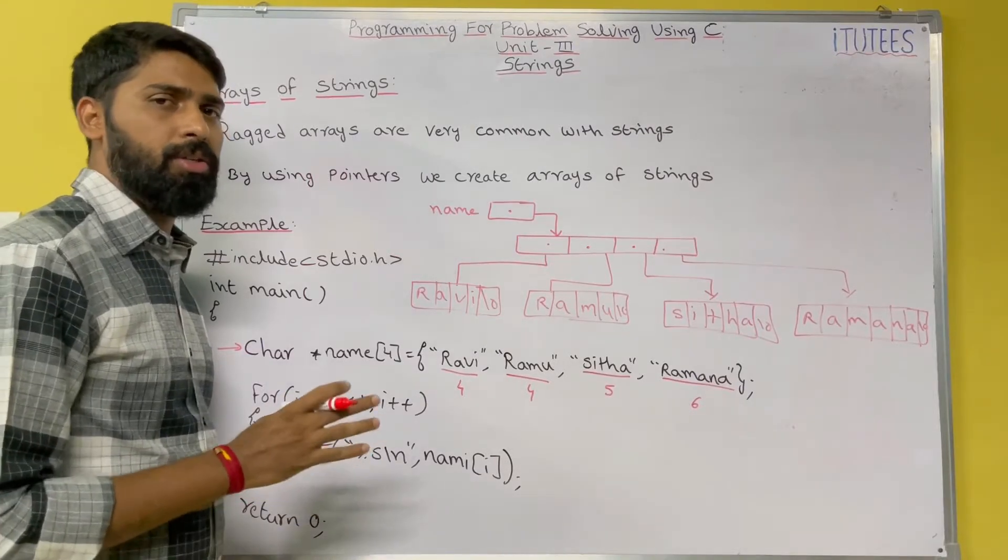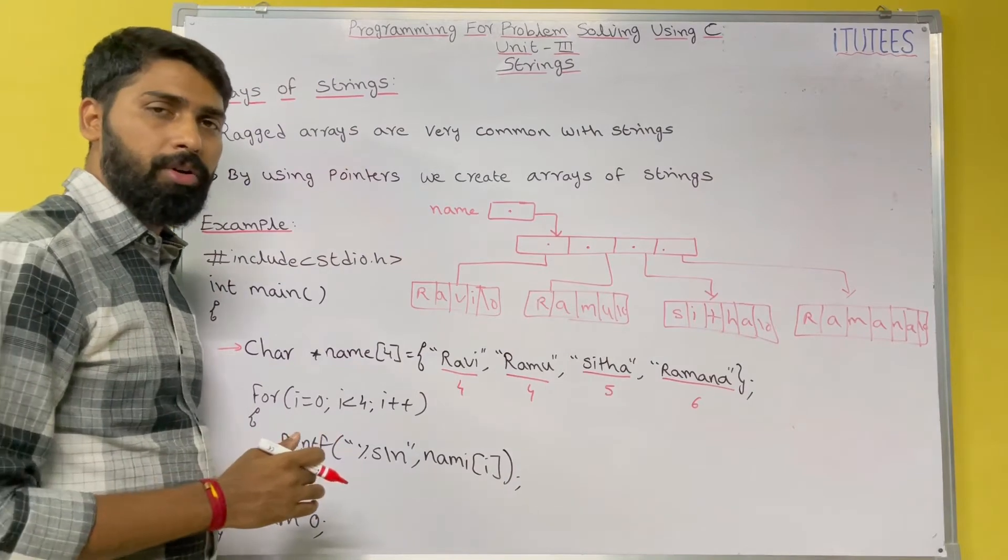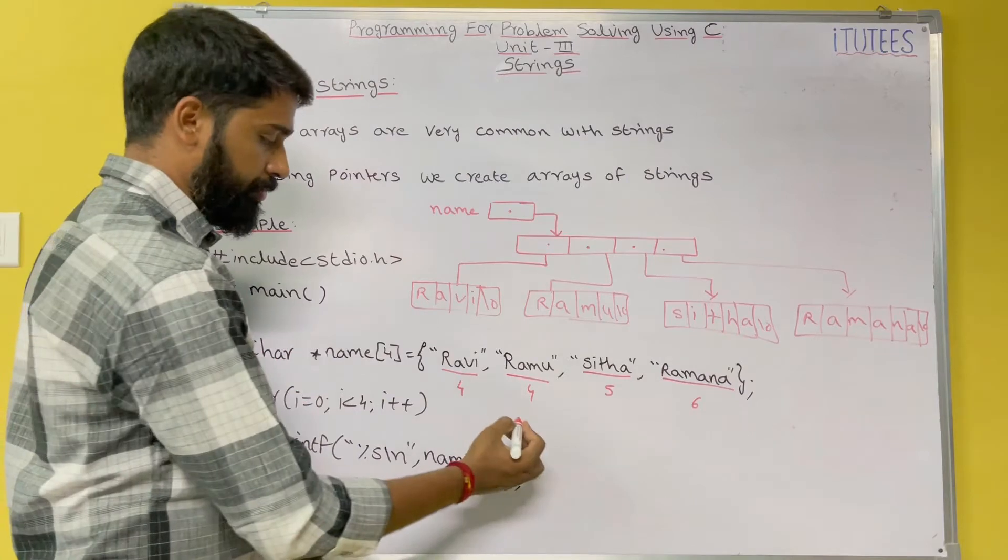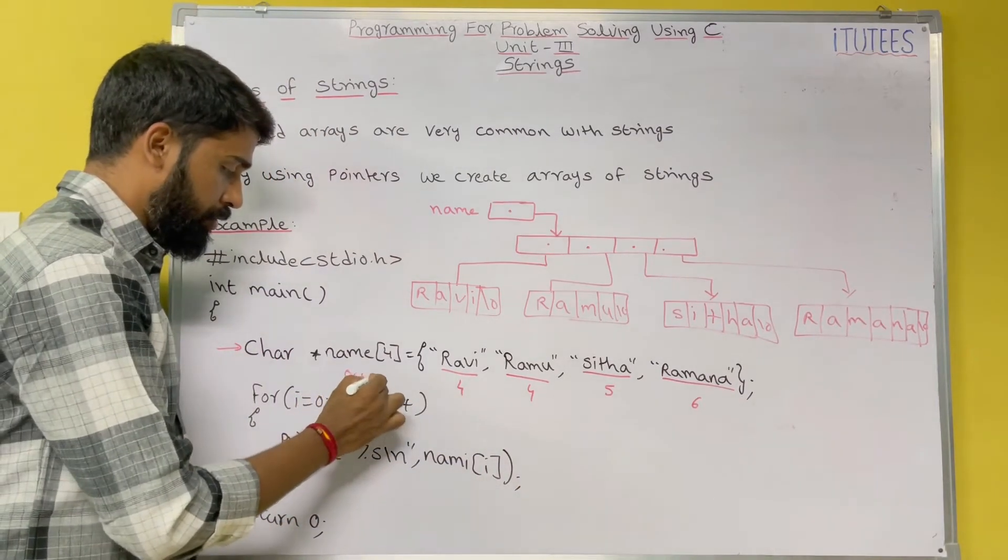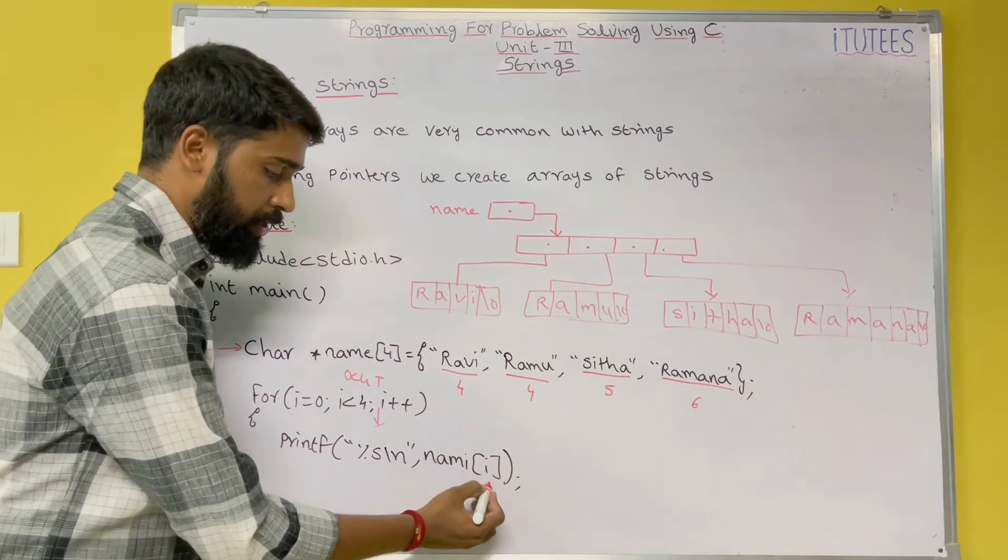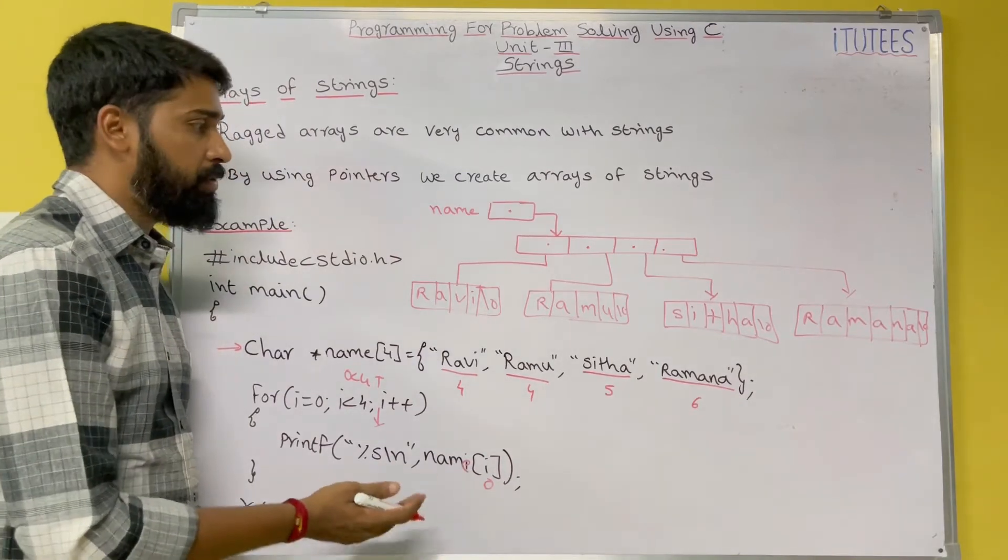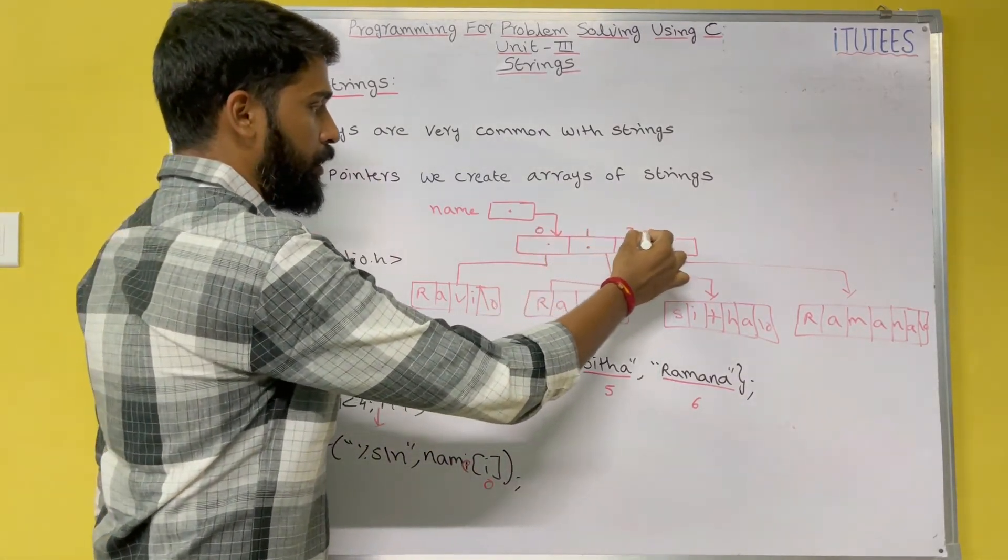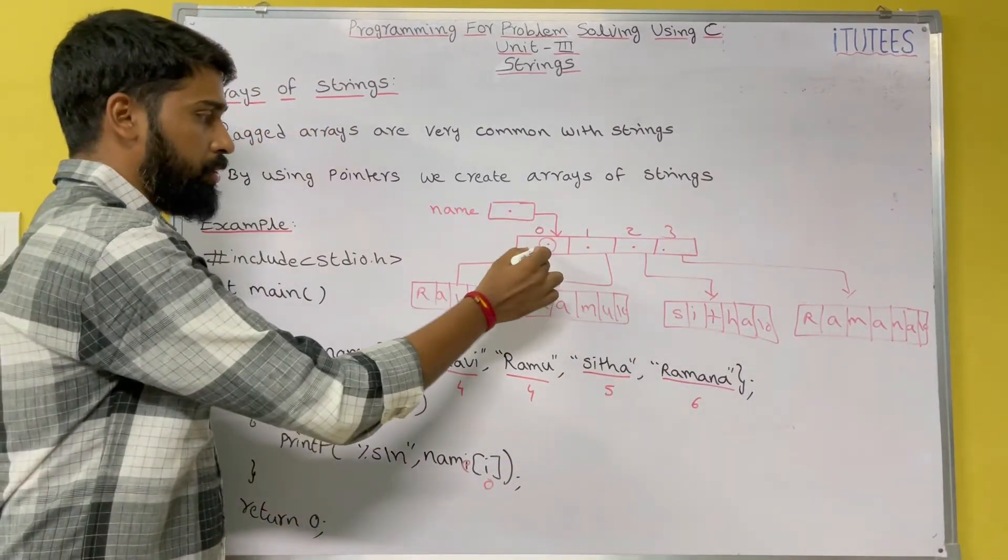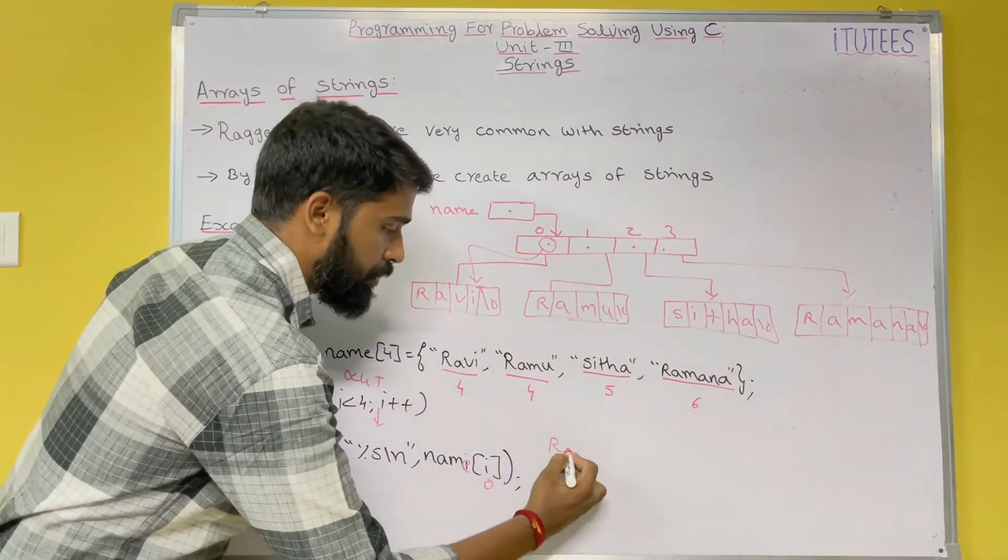By using these pointers, you are going to create array of strings. Now we are going to print these names. For i equals 0, i less than 4, true. Enter into the block. printf percentage s, name[i]. What is i? 0. So name[0] means this is 0, 1, 2, 3. In 0 index, there is a pointer. Traverse to this pointer and display the content. What is the content? Ravi. So Ravi is displayed until the delimiter is encountered.